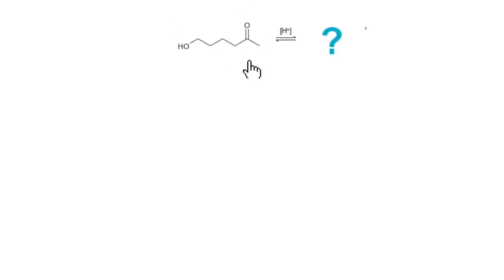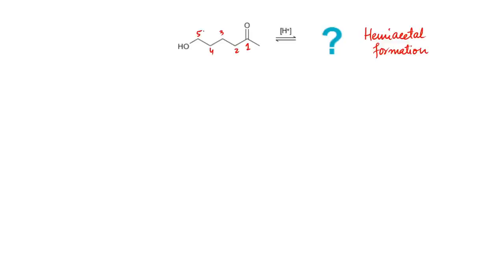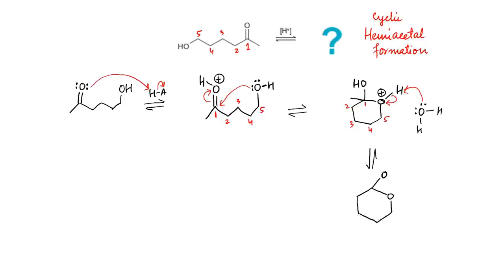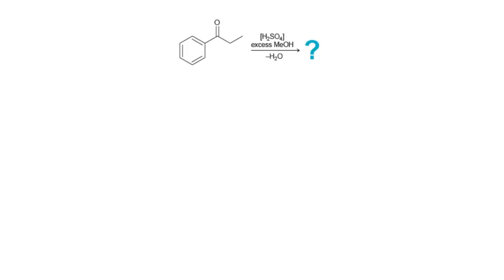Let us find the products formed by subjecting this compound to acidic conditions. The reactant has a keto as well as an alcoholic group, therefore acid treatment will lead to hemiacetal formation. Since both the keto group and hydroxyl group are present in the same molecule, a cyclic hemiacetal will be formed. To keep track of carbons and bonds, we can number the carbons starting from the carbonyl group as C1, C2, C3, C4, and C5, which is bonded to the hydroxyl group. The first step is the protonation of the carbonyl group, rendering it more electrophilic with a full positive charge. The hydroxyl group in the same molecule will then attack the electrophilic carbon and will form the cyclic compound, which is then deprotonated by water to form the cyclic hemiacetal.